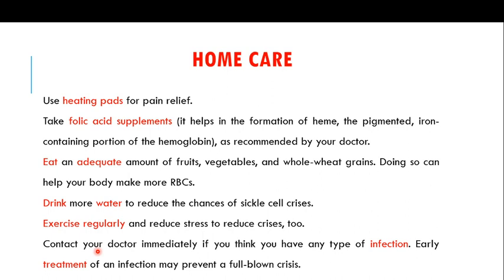Home care is also important. For pain crisis, heating pads can be used for pain relief. Folic acid supplements, as recommended by the doctor, can help in the formation of heme — the pigmented iron-containing portion of hemoglobin — and can minimize symptoms. Patients should eat adequate amounts of fruits, vegetables, and whole grains to help the body make more RBCs, and should drink more water to reduce the chances of sickle cell crisis, since dehydration contributes to sickling.